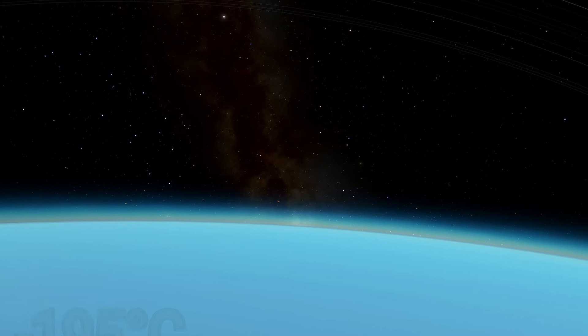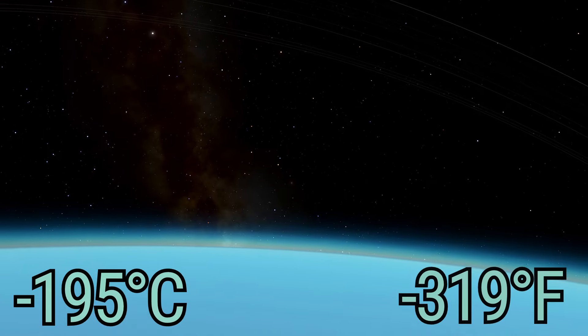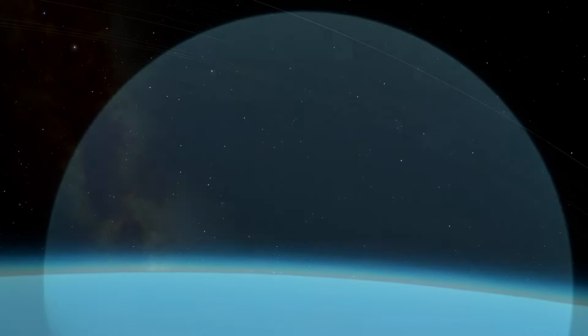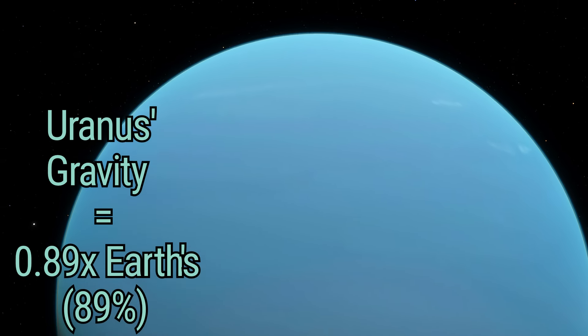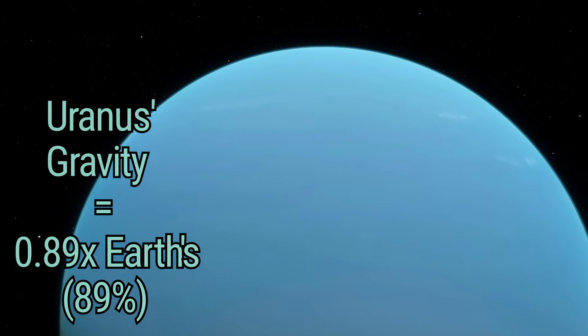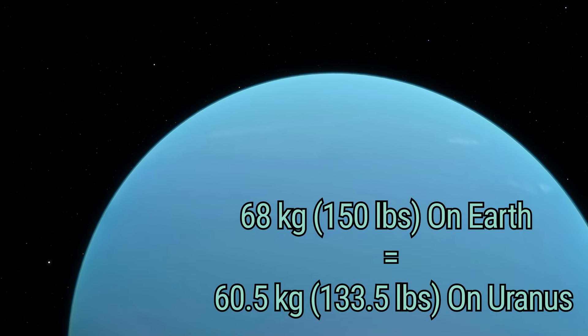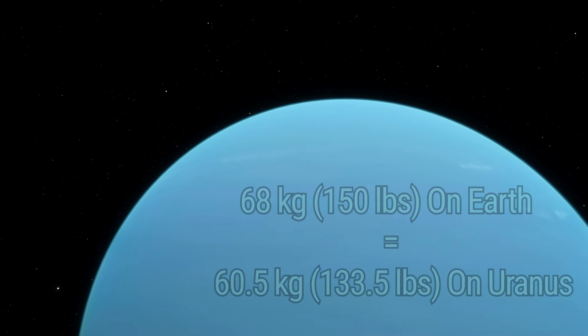The average temperature of Uranus is around minus 195 degrees Celsius, or minus 319 degrees Fahrenheit. Gravity here is 0.89 times that of Earth's, making our 68 kilogram, or 150 pound traveler's weight 60.5 kilograms, or 133.5 pounds, on Uranus.